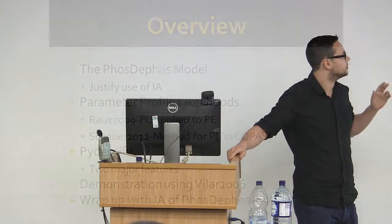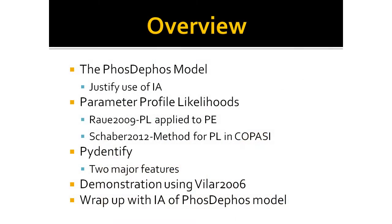The way I'm structuring this presentation: I'm going to briefly introduce a model that I'm calling the Phos-Dphos model — very simple, just phosphorylation — and hopefully justify the need for identifiability analysis. Then I'll talk about the method called parameter profile likelihoods, then discuss Identify and its features, followed by an example, and then perform identifiability analysis for the Phos-Dphos model.